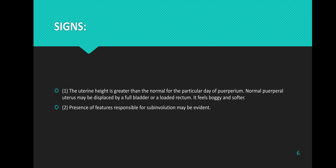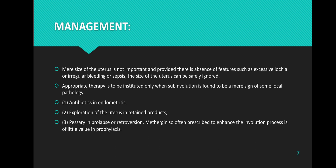Regarding management of uterine sub-involution: mere size of the uterus is not important, provided there is an absence of features such as excessive lochia, irregular bleeding, or sepsis — the size of the uterus can be safely ignored. Appropriate therapies should be instituted only when sub-involution is found to be a sign of some local pathology.